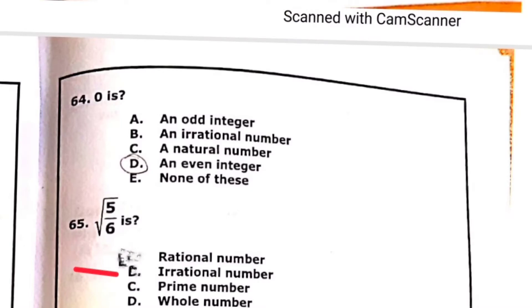Question 64: 0 is basically an even number because every number that is divisible by 2 is an even number.